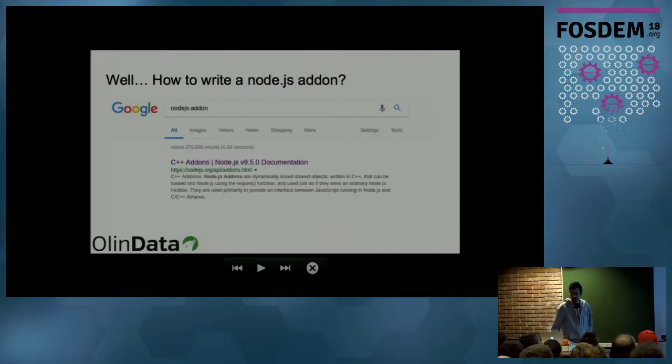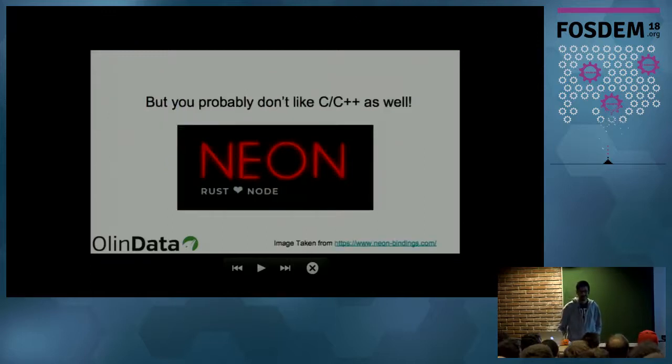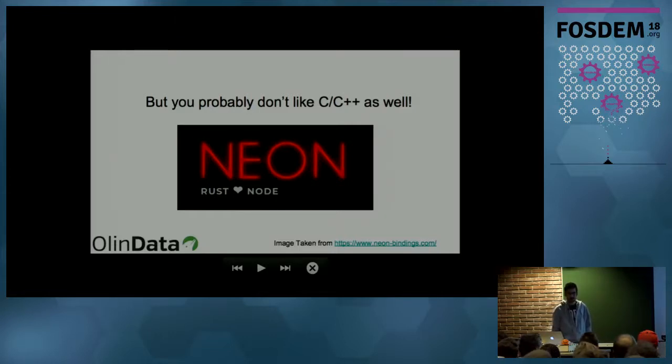So how to write a Node.js add-on. I searched it, and C++ shows up. Not a fan. And I hope you are not a fan of C++, because this is a Rust room. So I found Neon. Neon is a project to bring Rust and Node.js closer. It helps you to write bindings.